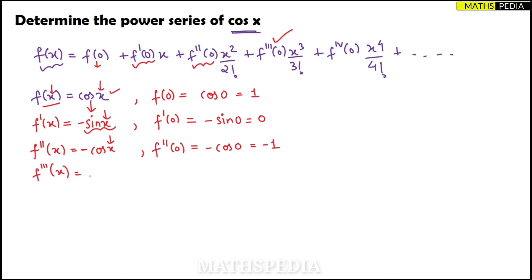For the third derivative, differentiate -cos x: the derivative of cos x is -sin x, so two negatives give plus sin x. Therefore f'''(x) = sin x and f'''(0) = sin(0) = 0.